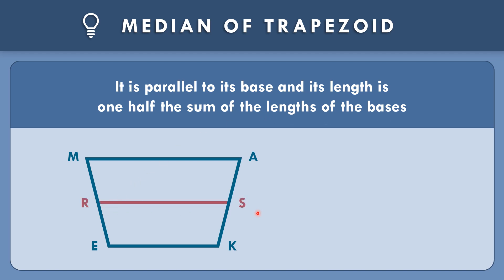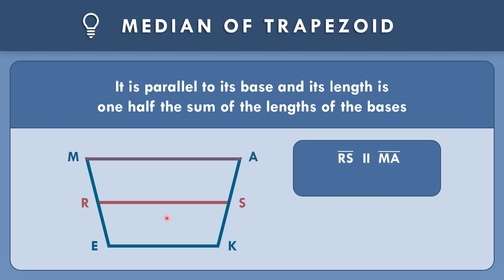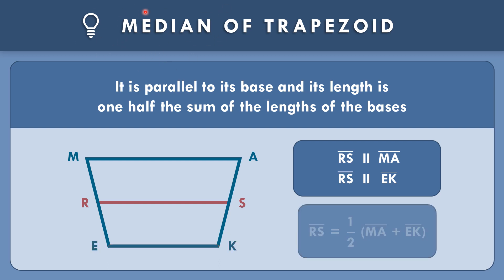Segment RS could be the median. So, segment RS is parallel to segment MA, and segment RS is also parallel to segment EK. Segment MA and segment EK are the bases. The formula for the median of the trapezoid is: segment RS equals one-half multiplied by the quantity segment MA plus segment EK.